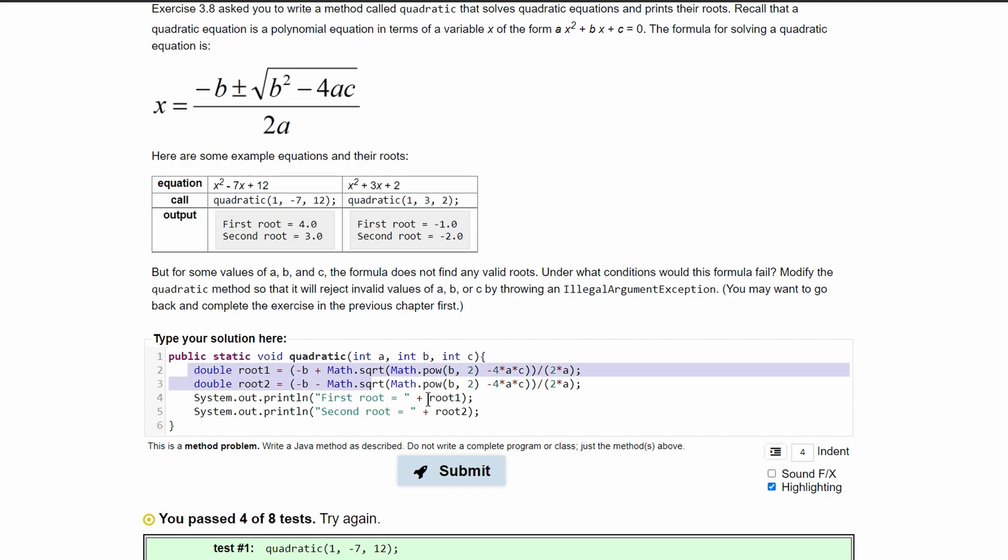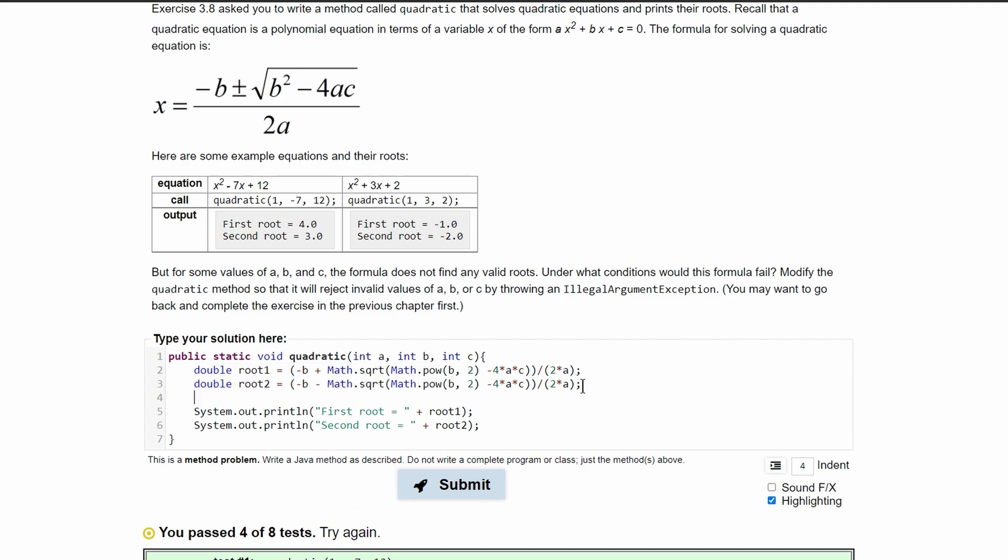In the math portion of our code, we have this math.sqrt. So we're going to look inside of these parentheses, which gives us all of this right here.